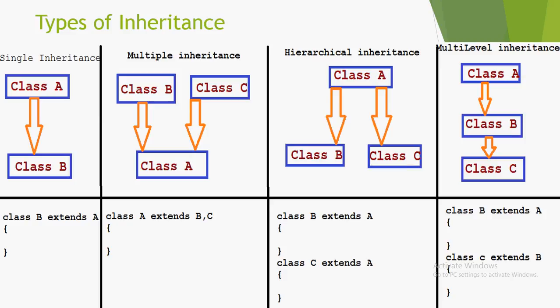Fourth, multi-level inheritance: class C extends class B, and class B extends class A. So in class C we have properties of both class B and class A, because class C is a child of class B and class B is a child of class A. This is multi-level inheritance.